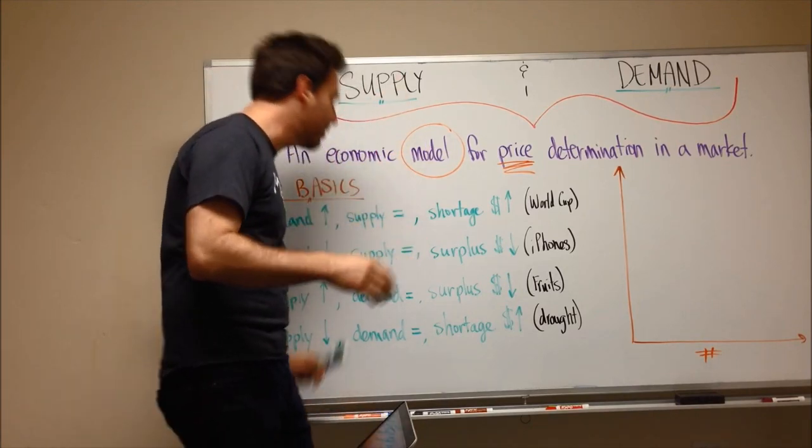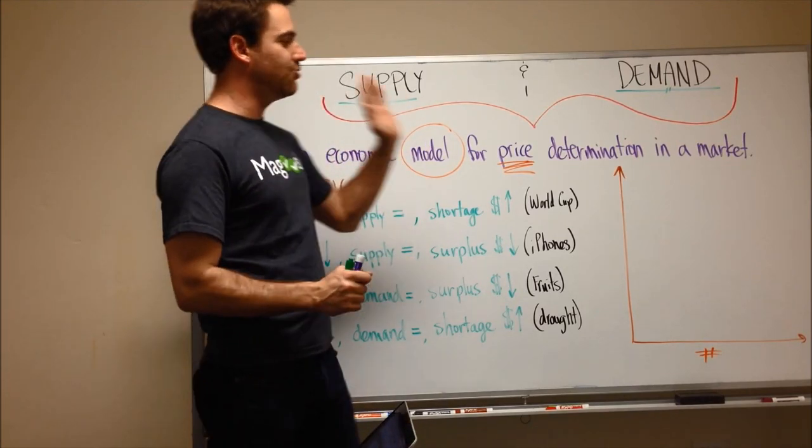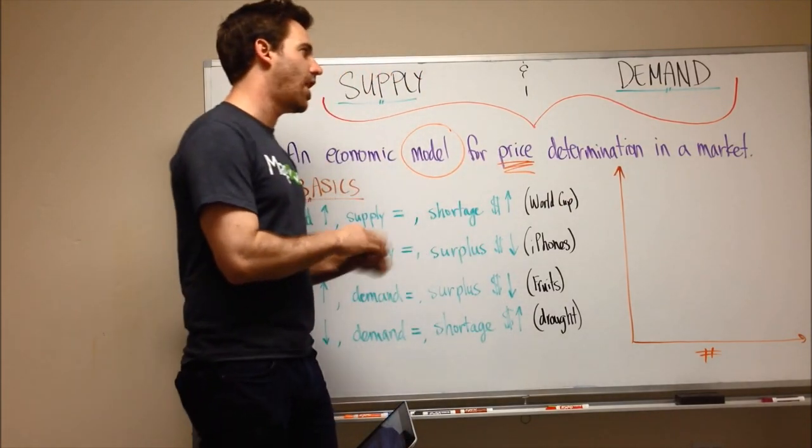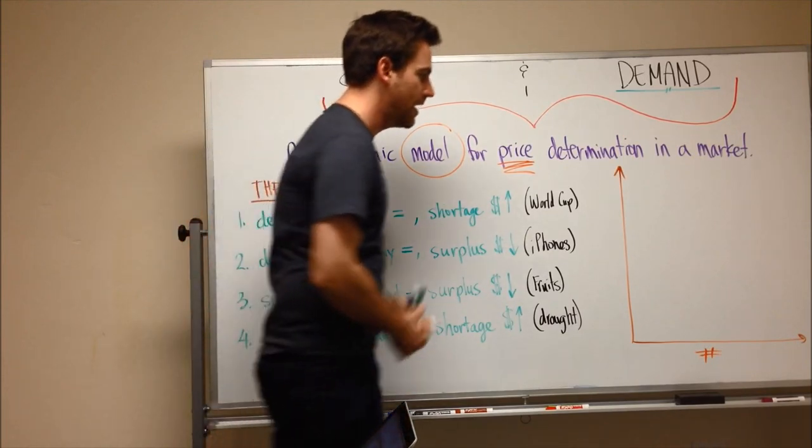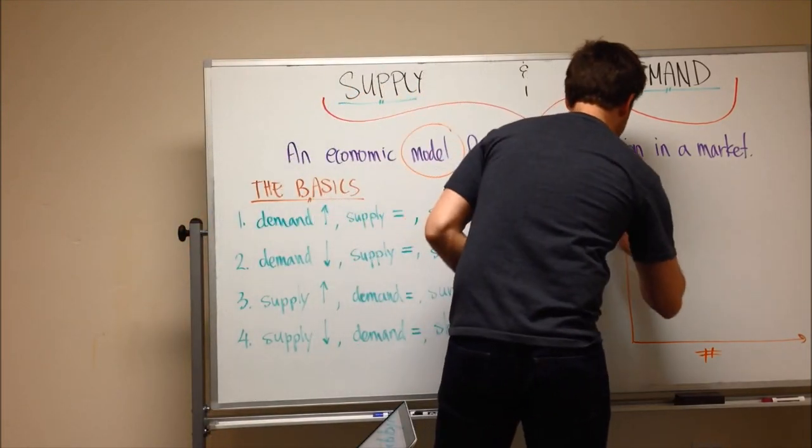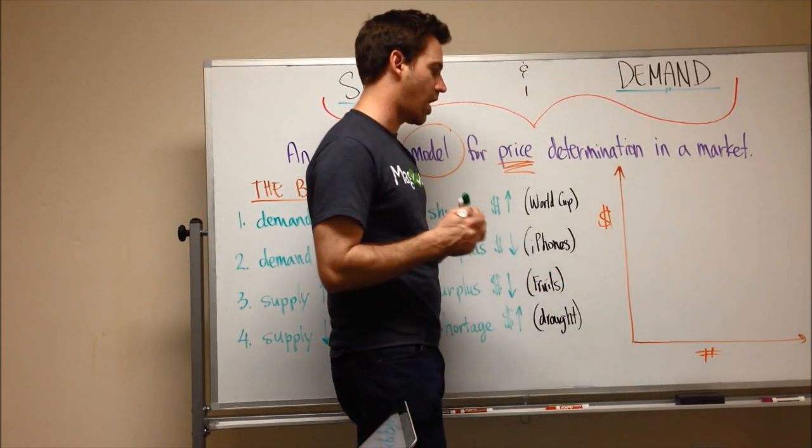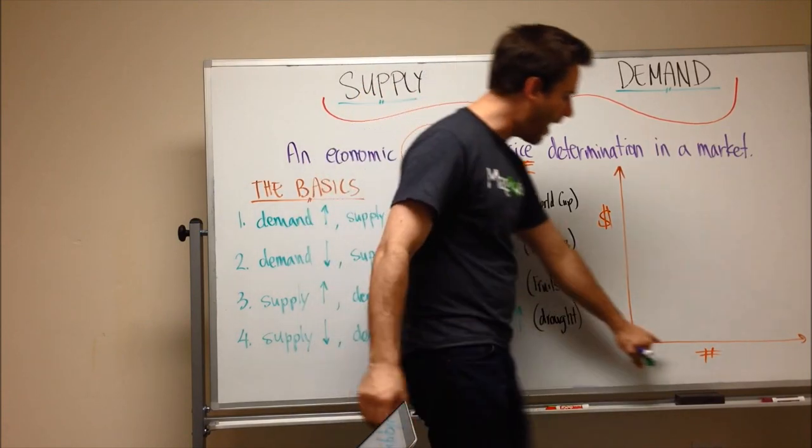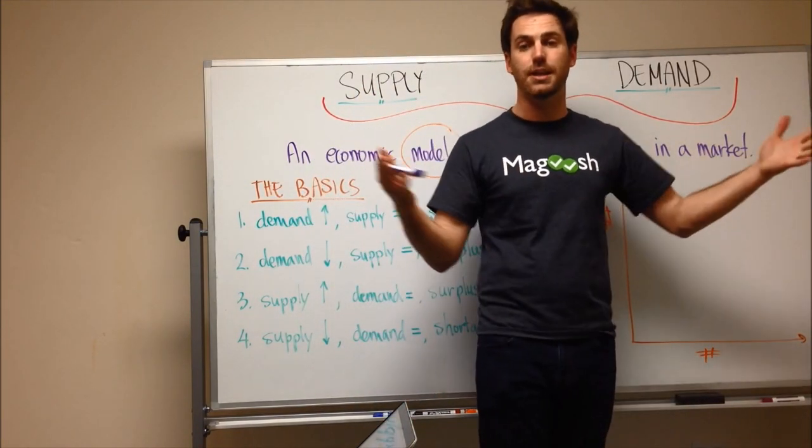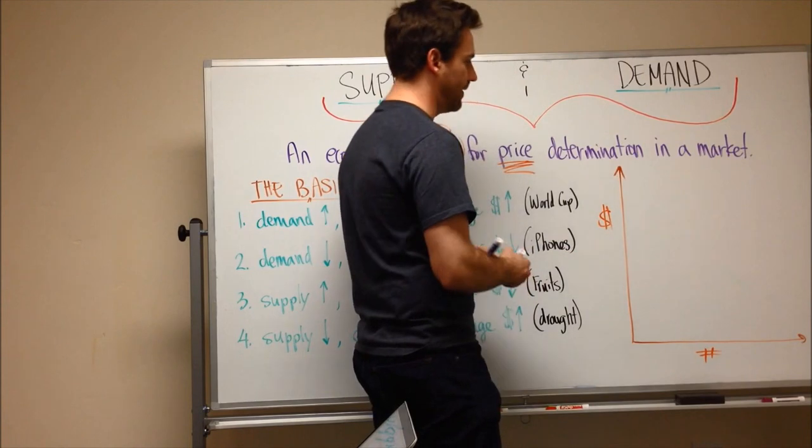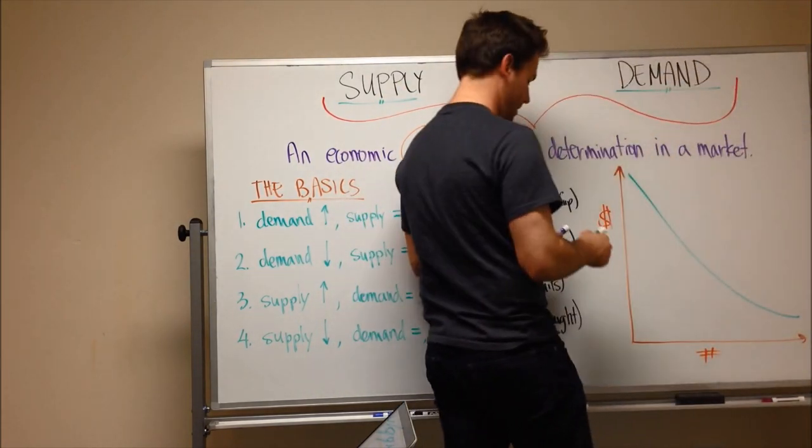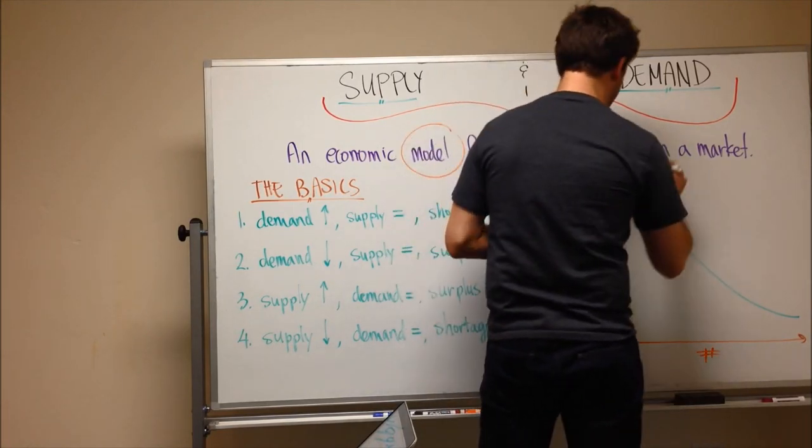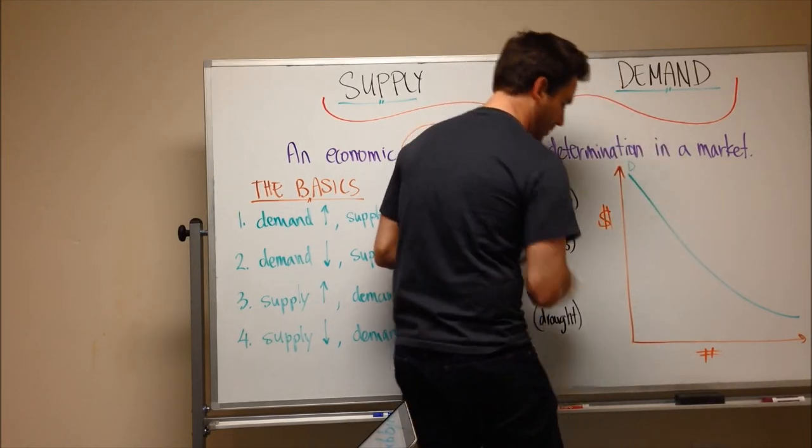So let me get my Magoosh colors and draw a graph. What you can see often is that supply and demand is modeled on a graph. And your y-axis is going to be your cost or price. And then on the bottom is going to be the quantity of the thing. The demand curve starts here and goes down. And the supply curve goes the other way.